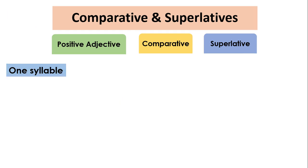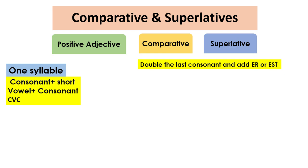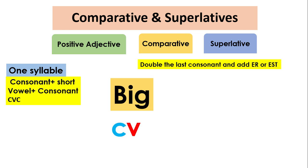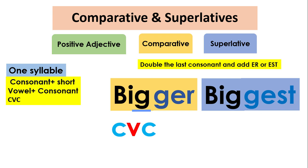When an adjective has one syllable and ends in a consonant plus a short vowel plus a consonant — such as 'big' and 'hot' — we double the last consonant and add ER for the comparative and EST for the superlative. For example, 'big' ends in consonant-vowel-consonant: B is a consonant, I is a vowel, and G is a consonant. So we double the last consonant G, and it will be 'bigger'. The superlative of 'big' will be 'biggest' by adding G-E-S-T.